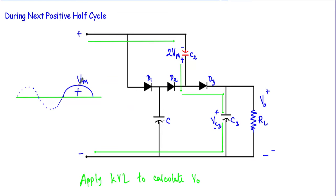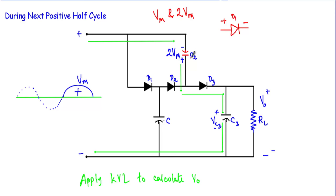Now consider the second positive half cycle at its maximum value. This terminal is positive and this terminal is negative. Capacitor C2 will find a way to discharge its stored voltage of 2Vm. I consider Vm and 2Vm as two independent voltage sources. For diode D1, the positive terminal of the input is at its P side, but the 2Vm capacitor voltage applies its positive terminal to the N side of D1, overwriting the input voltage's effect. Therefore, diode D1 is in reverse bias and is replaced with an open circuit.